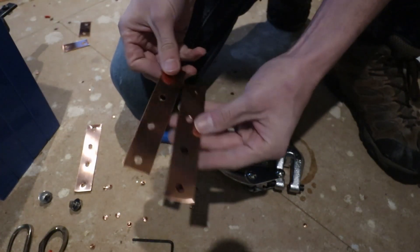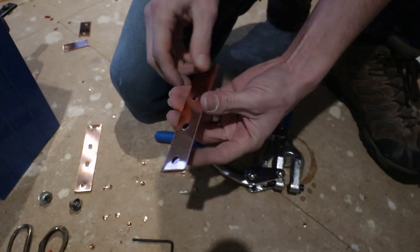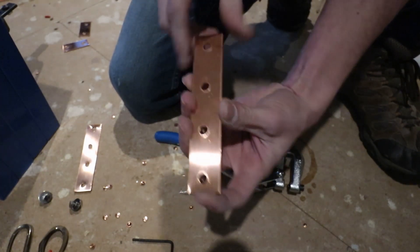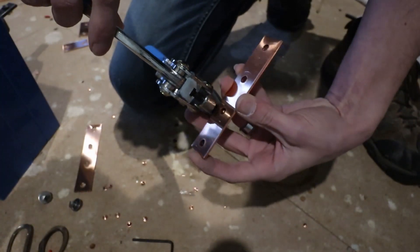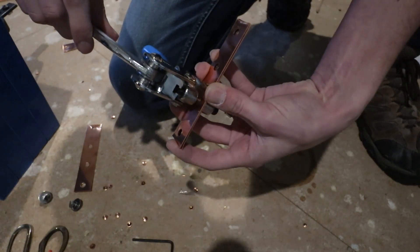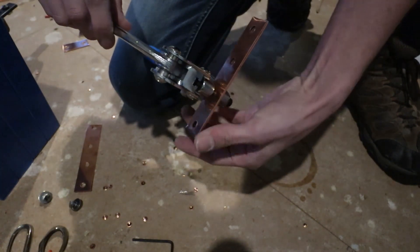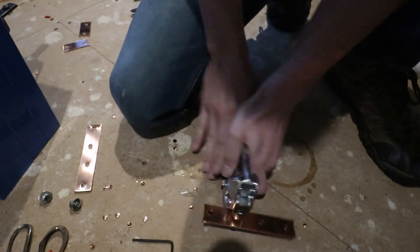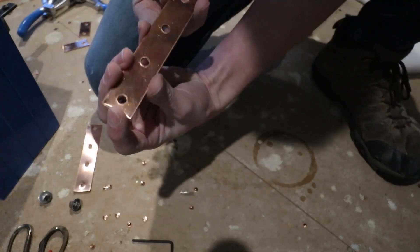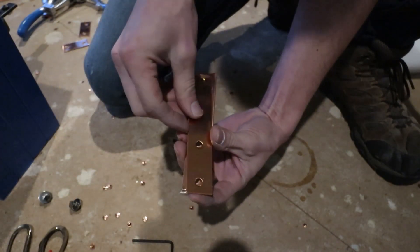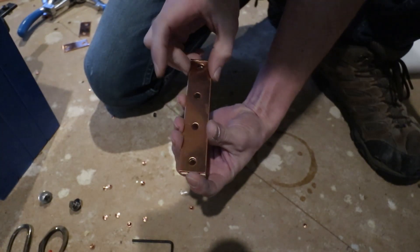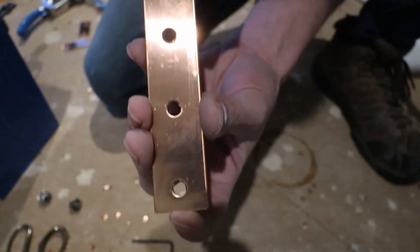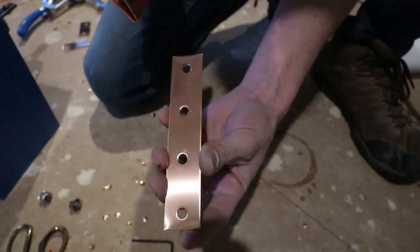Another tip is once you get one bus bar that you like that has the holes in the right place, instead of just marking holes and then punching, you can actually hold the good bus bar on top of the new one and go ahead and punch right through it, which should give you an exact copy of what you want. There we go. Exact copy. Whereas this one I did, I just marked holes and then punched and you can see it's just a tad bit off from the original. You can be real careful and get the original just right. You can use it as a template.